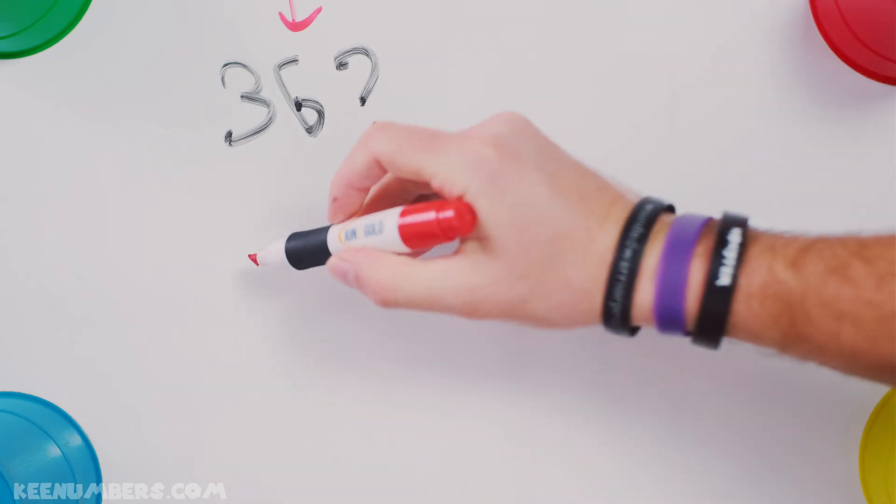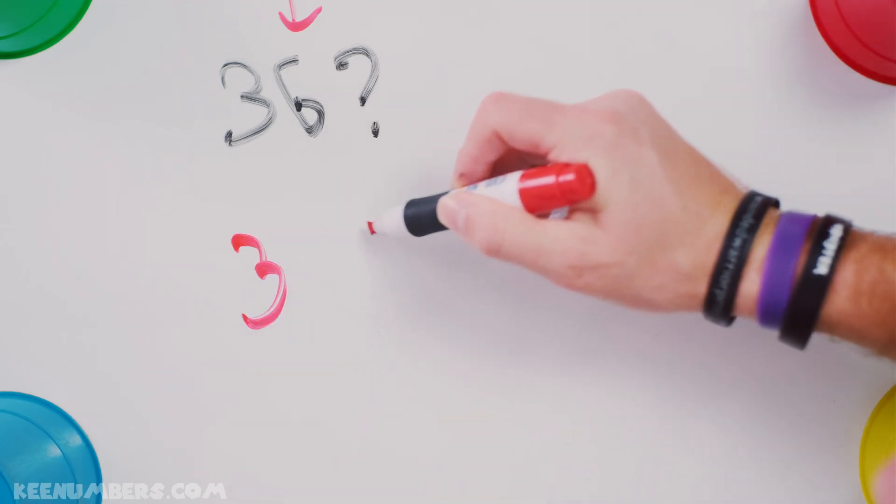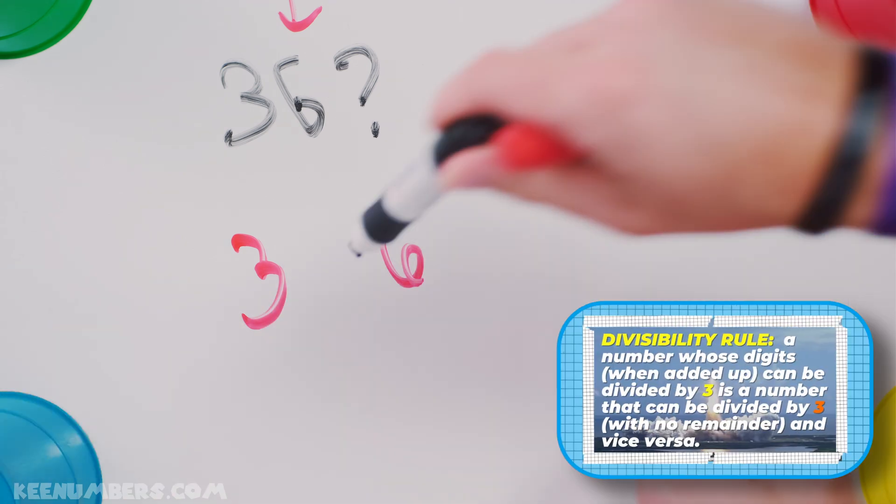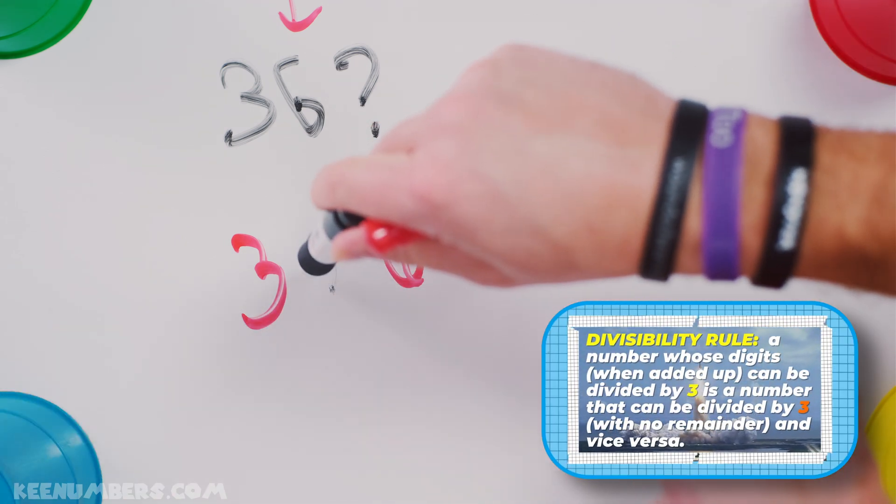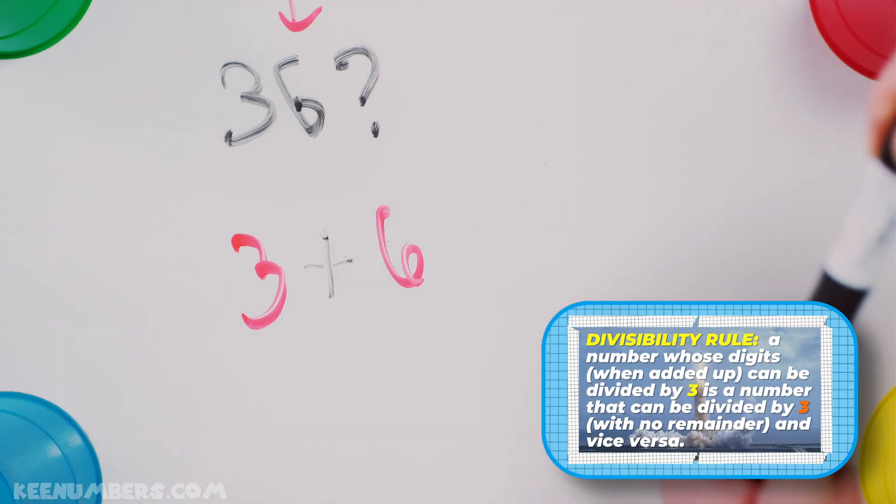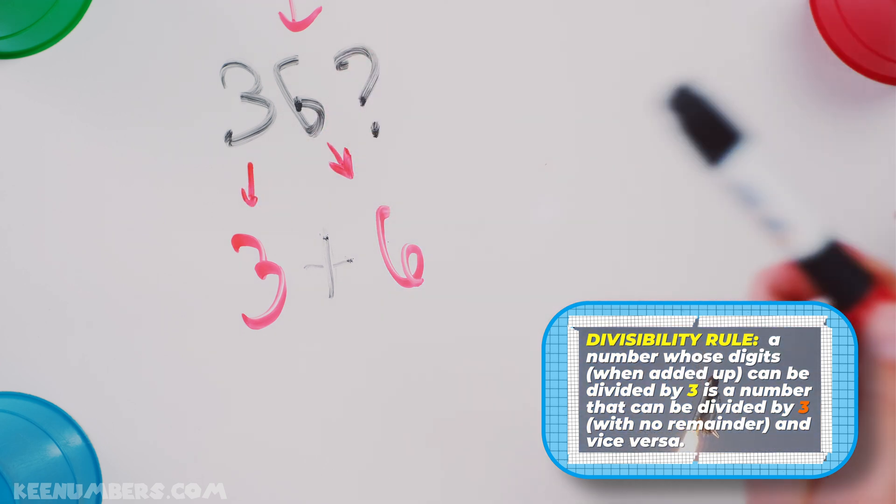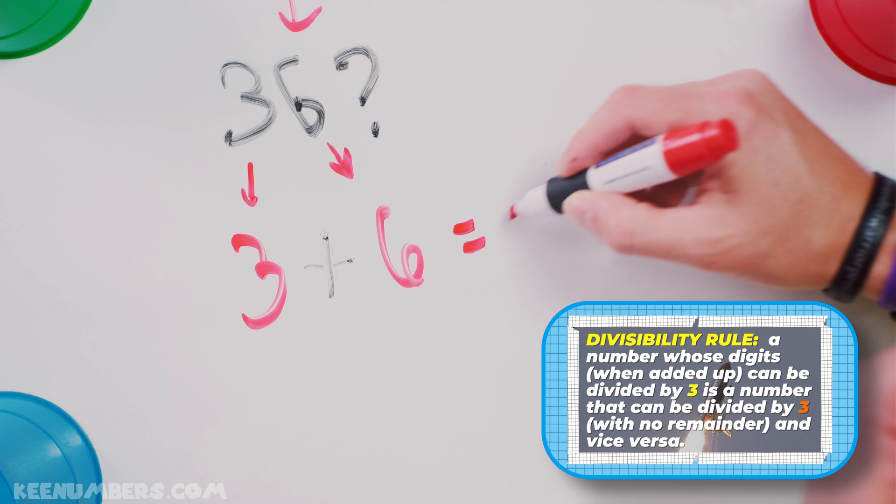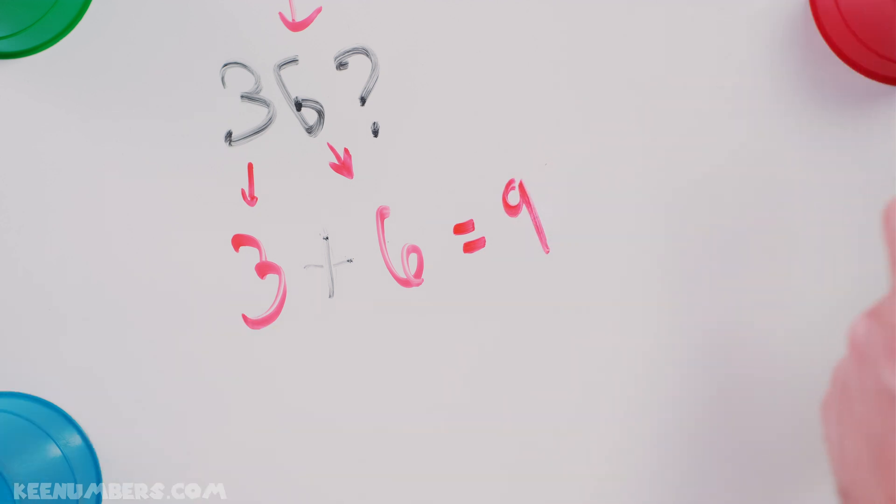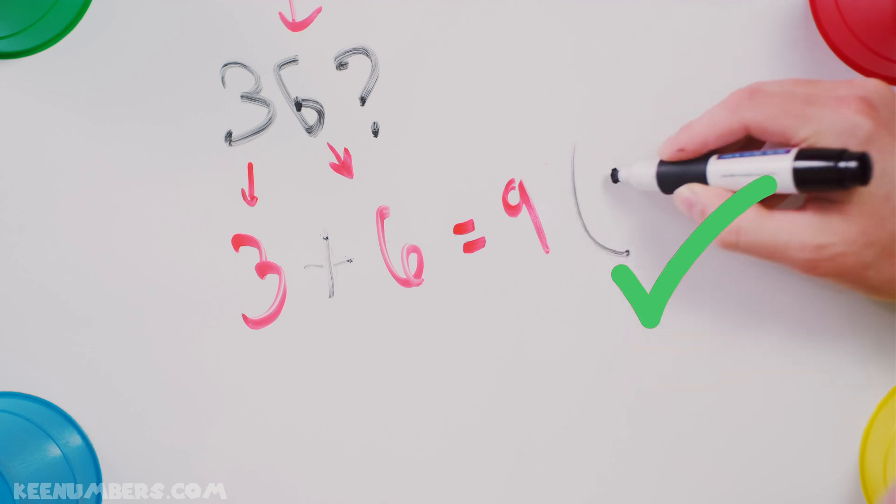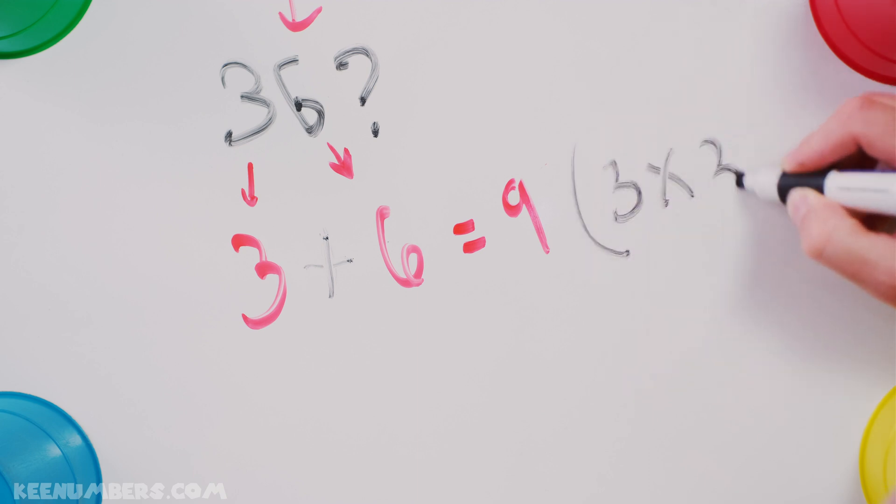Now you're going to say 3 plus 6. Come on, Marker. Don't fail me now. You're adding up the digits. And by doing so, you get 9. 9 is divisible by 3, right? Because that is just 3 times 3.